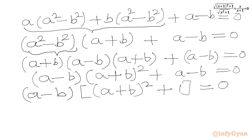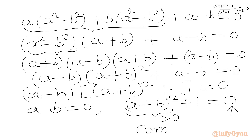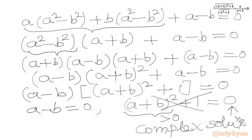Using the product zero rule, either a − b = 0 or (a+b)² + 1 = 0. Since (a+b)² is always positive, a positive number plus 1 cannot be 0, so this gives complex solutions. We reject it as we are looking for real solutions. Therefore a = b.